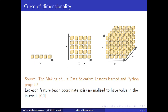When d equals 2 and we split each axis into 5 parts, total parameters become 5 times 5 equals 25. When d equals 3, we need 5 cubed equals 125 parameters. Suppose we have 100 features — we need 5 to the power 100 parameters to estimate. That's enormously huge. In order to estimate that many parameters, we need a very large amount of training data, which is practically impossible.